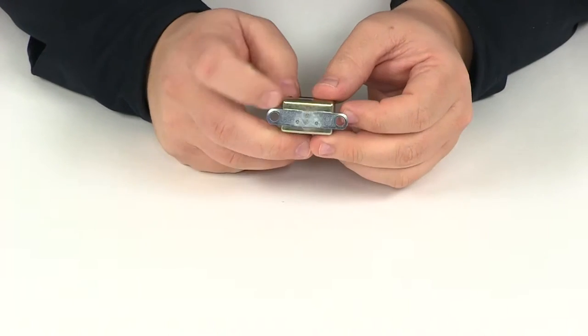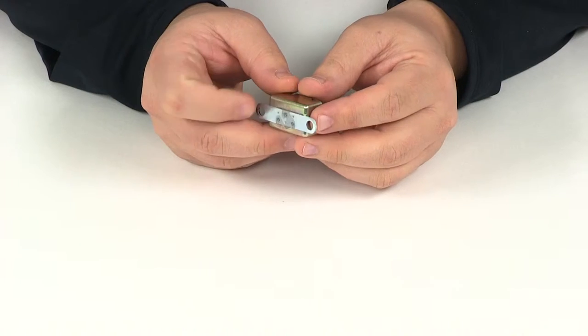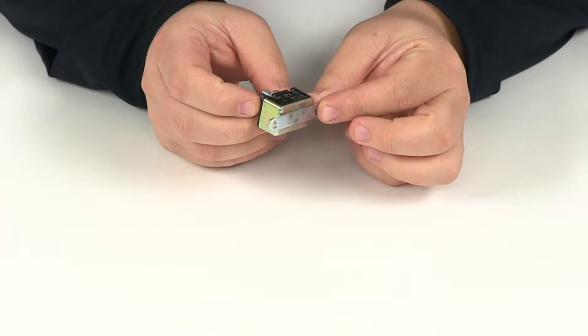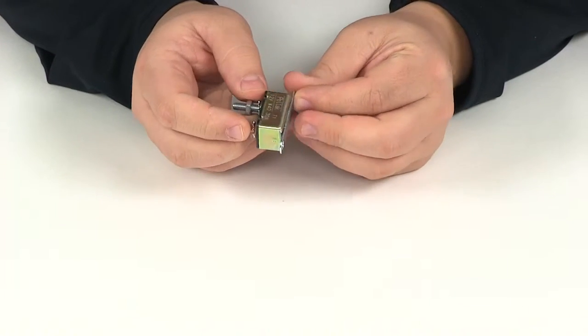Today we're going to be taking a look at part number PK54530. This is the Pollock 30 amp circuit breaker. This breaker is going to help prevent your battery from draining and the auxiliary application from overdrawing.